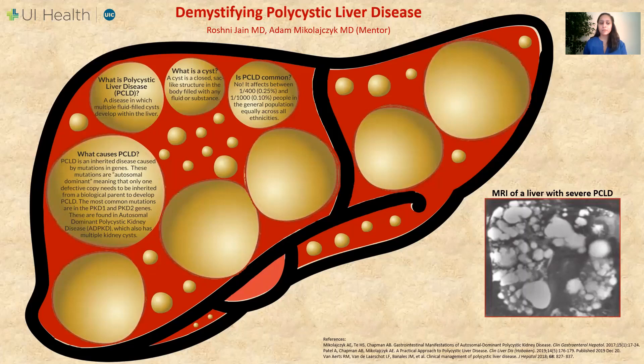The most common mutations are in the PKD1 and PKD2 genes. These mutations are found in autosomal dominant polycystic kidney disease, which also has multiple kidney cysts.